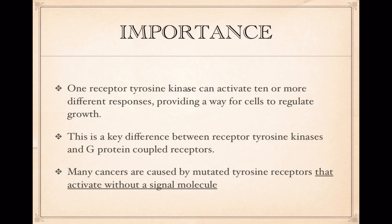One receptor tyrosine kinase can activate 10 or more different responses, providing a way for cells to regulate growth in many different ways. The more options available, the more finely you can tune a system — which is absolutely critical for a complex organism like a human being. This ability to activate multiple responses is a key difference between receptor tyrosine kinases and G protein coupled receptors.